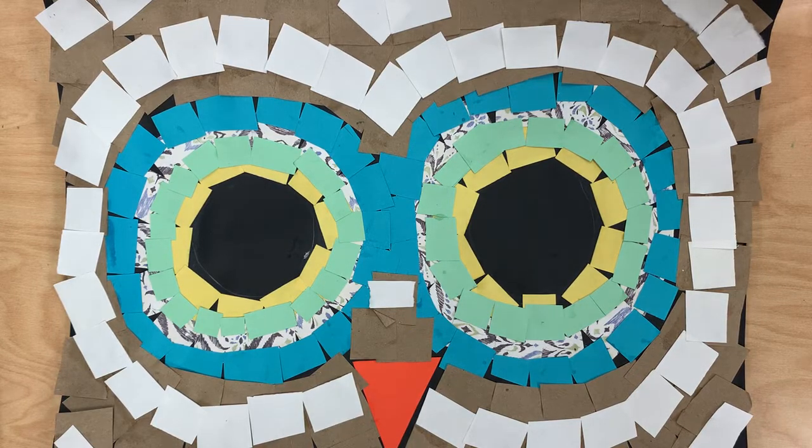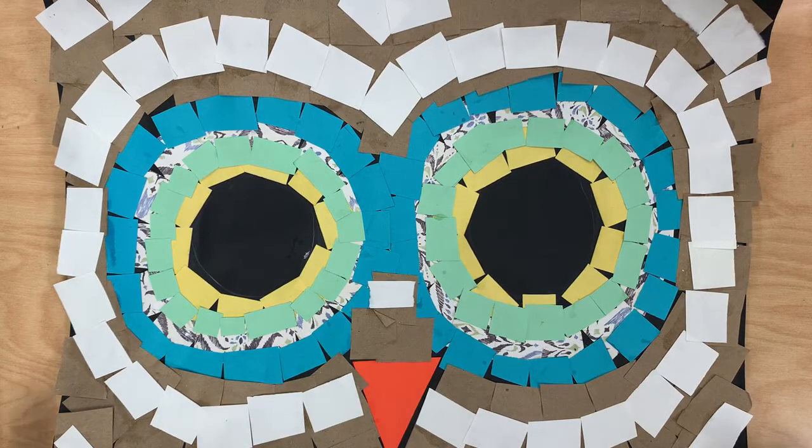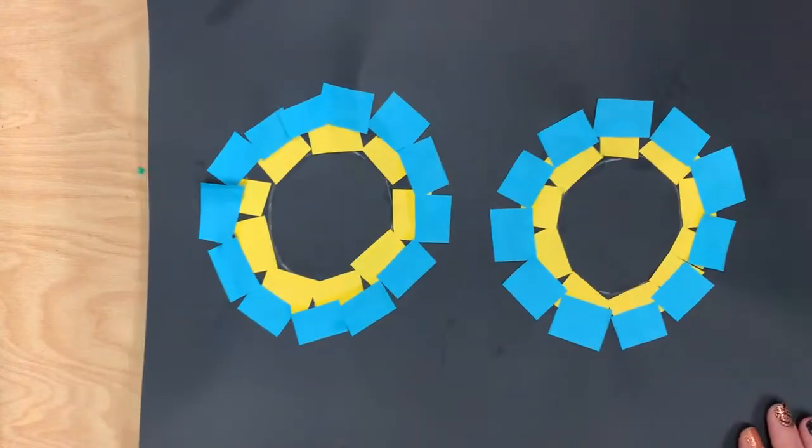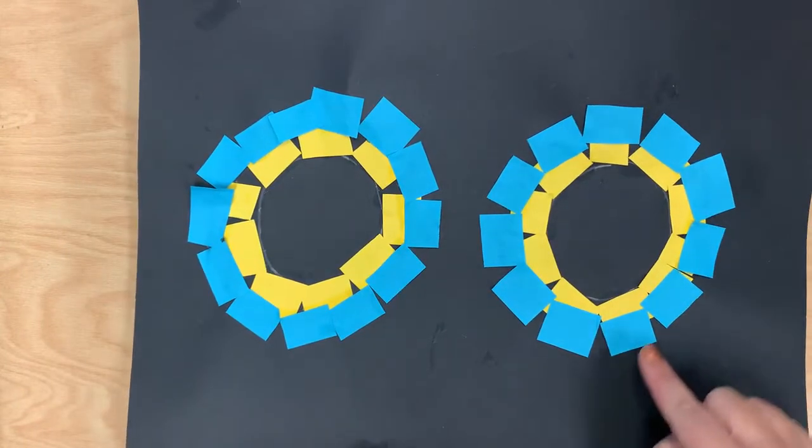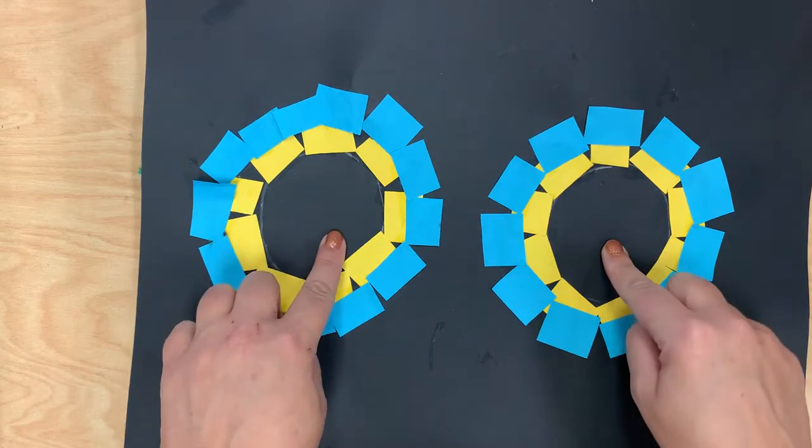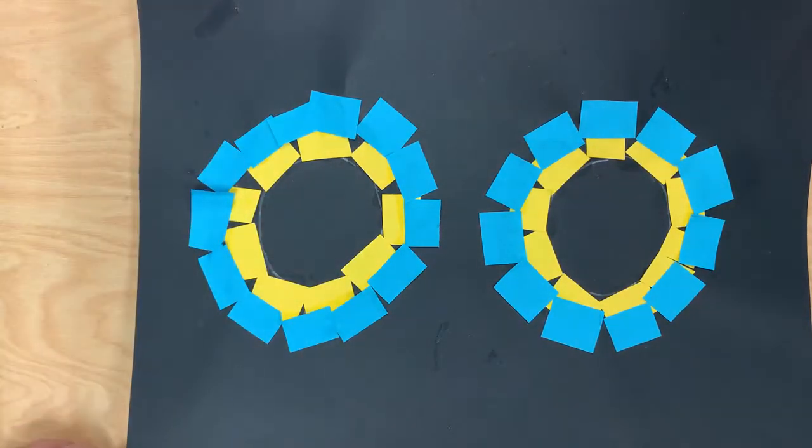Hello everyone! Today we are going to continue working on our mosaic owl faces. Last time we started by adding two layers of mosaic paper pieces around our owl's eyes. Today we're going to add two more layers and a beak.